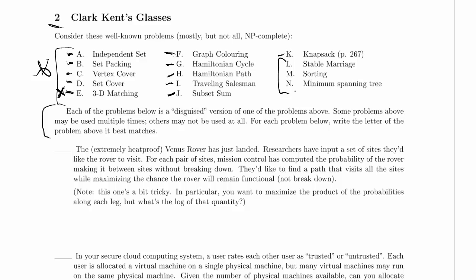In sorting, you're given a list of elements and some means of comparing them — testing whether one element is less than another — and you produce a sorted list containing exactly the same elements. Note that stable marriage and sorting are not decision problems, though we could create decision versions of them.